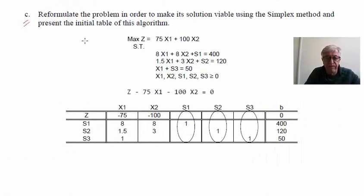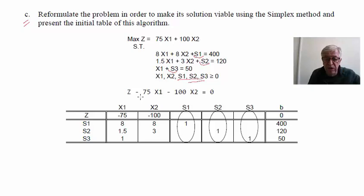The third question asks us to reformulate the problem for the simplex method and present the initial simplex table. We transform the inequality constraints into equalities by introducing slack variables: s1 in the first restriction, s2 in the second, and s3 in the third. These slack variables must also be greater than or equal to zero. We then rewrite Z with everything on the left-hand side, and build the table with decision variables first, then slack variables.